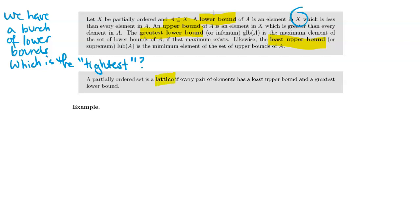We have analogous definitions for upper bounds and least upper bounds. The least upper bound is sometimes called the supremum and is abbreviated as LUB of A. A partially ordered set is a lattice if every pair of elements has a least upper bound and a greatest lower bound.